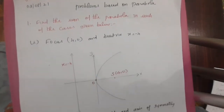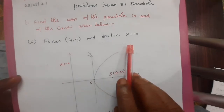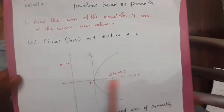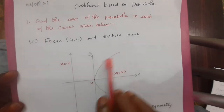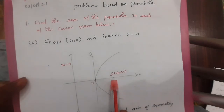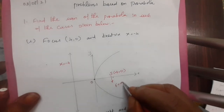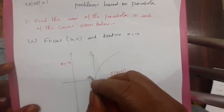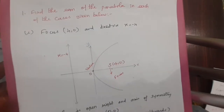See the first question, first subdivision. What is given? Focus and directrix. So first we draw the x-axis carefully. This is the x-axis, this is the y-axis. See the diagram — the origin. The curve is passing through the origin. This curve is open rightward, because the focus lies on the x-axis. The vertex is nothing but the origin.